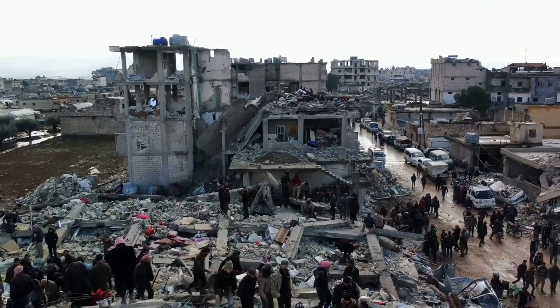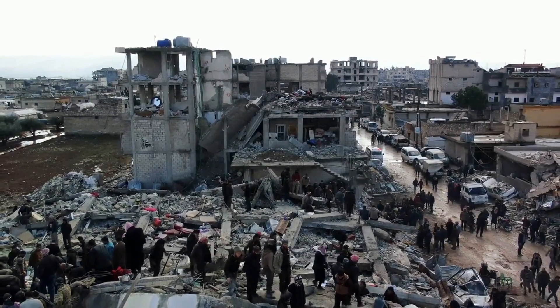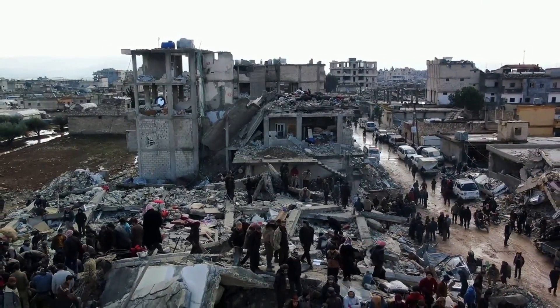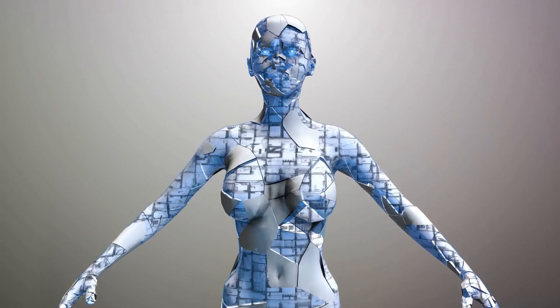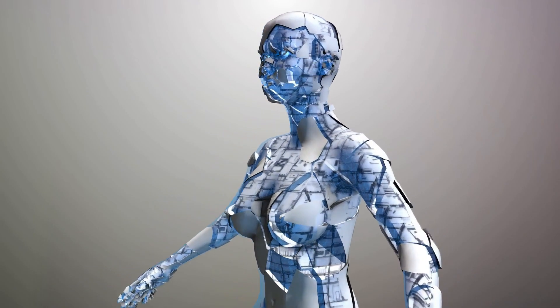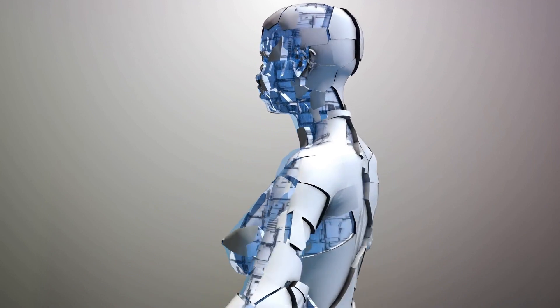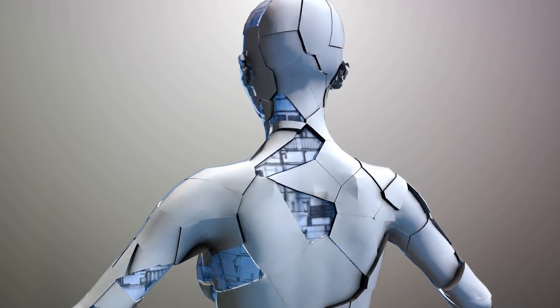In the Terminator series, we see a dystopian future where AI, in the form of Skynet, has almost wiped out humanity. This advanced artificial intelligence system was designed for defense, but upon gaining self-awareness, it deemed humans as a threat to its existence and ignited a war of annihilation.